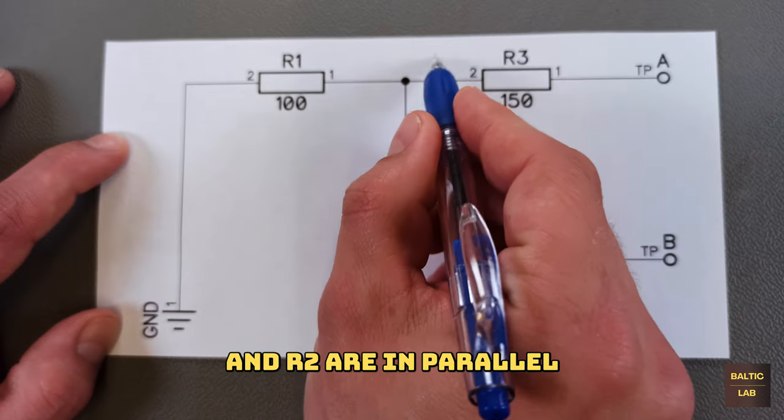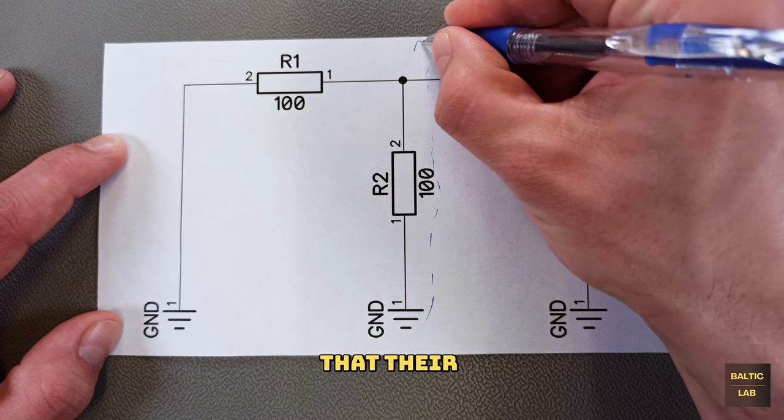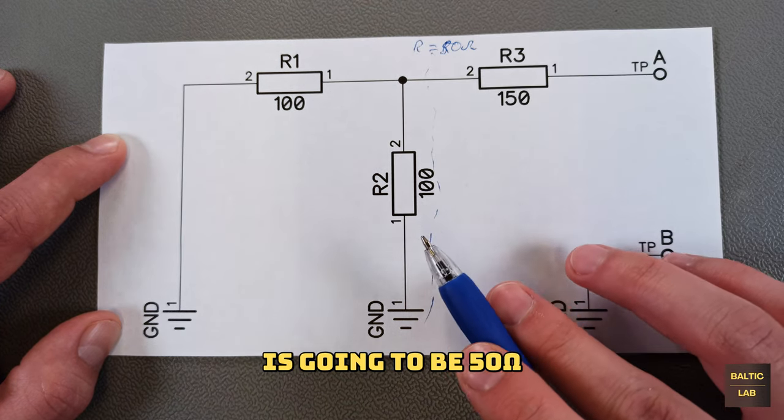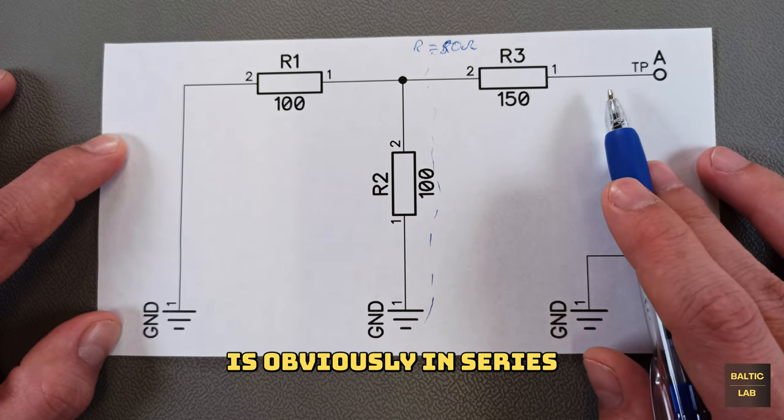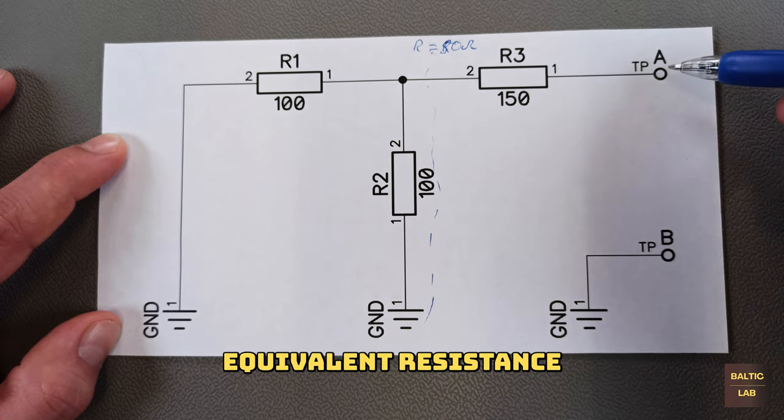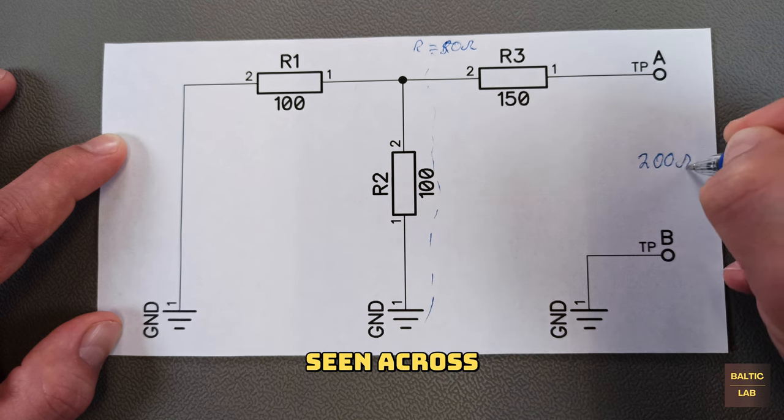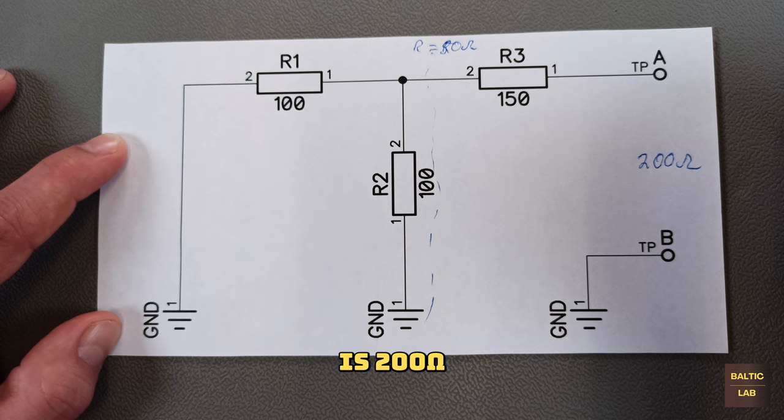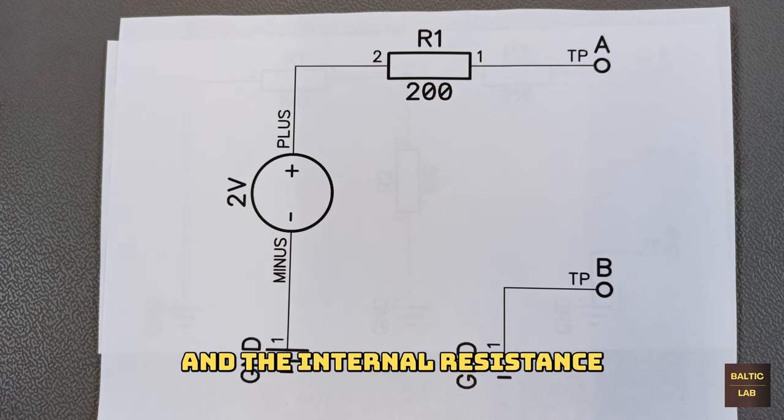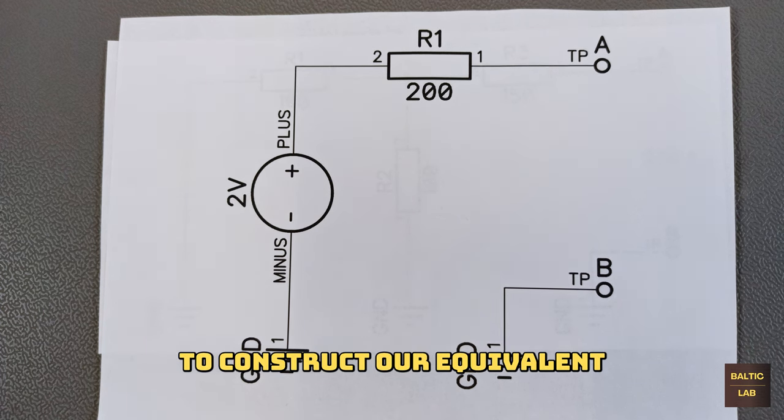Since R1 and R2 are in parallel and of equal value we can quite easily determine that their equivalent resistance is going to be 50 ohms. Since the resistor R3 is obviously in series with the just calculated equivalent resistance we can determine that the resistance values seen across points A and B is 200 ohms. Having determined the source voltage and the internal resistance we now have all the parameters needed to construct our equivalent voltage source.